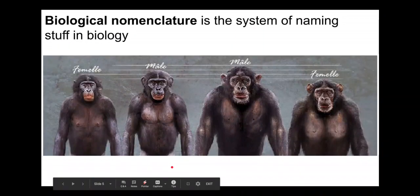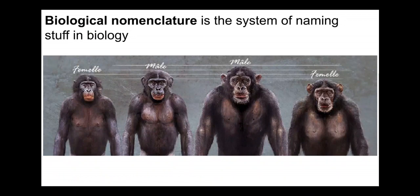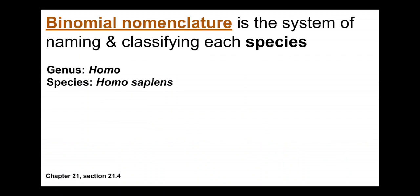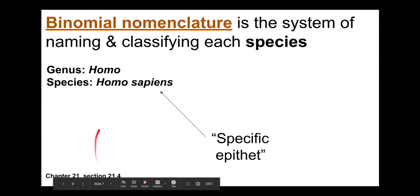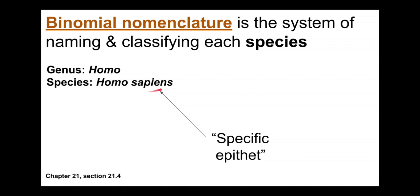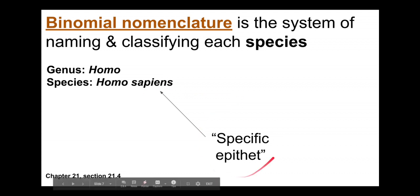Biological nomenclature is particularly the system and the rules of naming stuff — of naming species. For example, for humans, the rules are that all species have two names: the genus and species. Humans are the genus Homo, and the species is Homo sapiens. The first part is the genus name, and the second part is the species name, called the specific epithet.